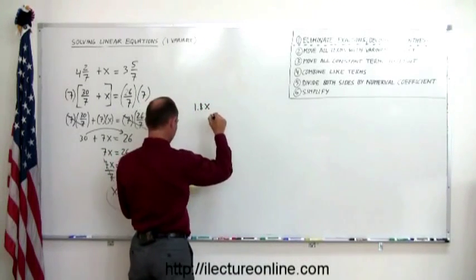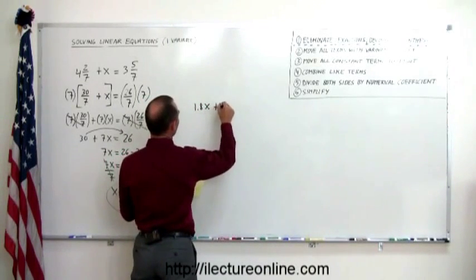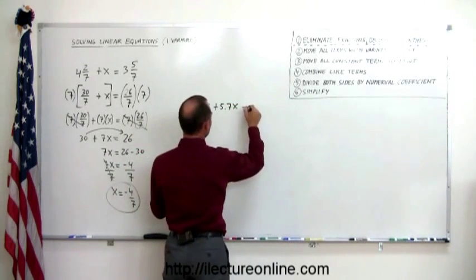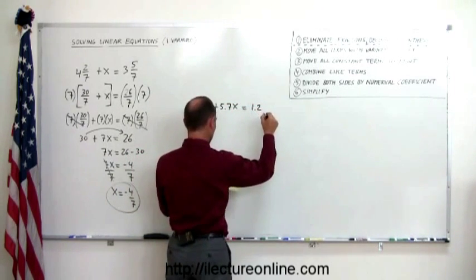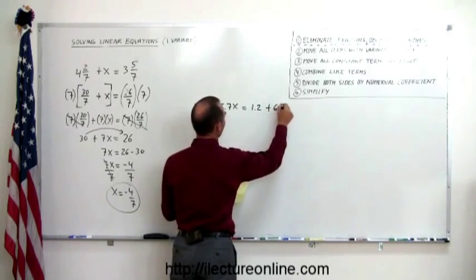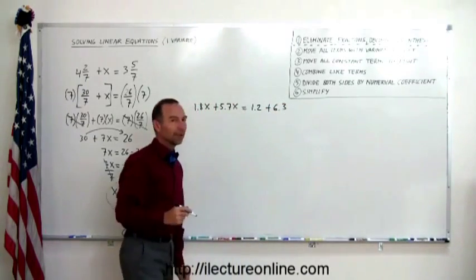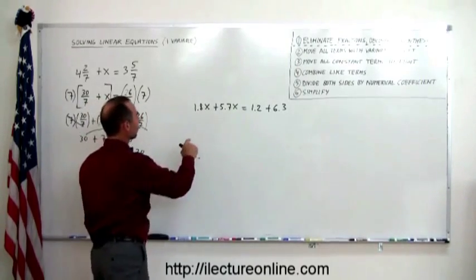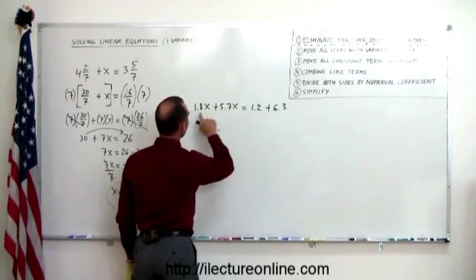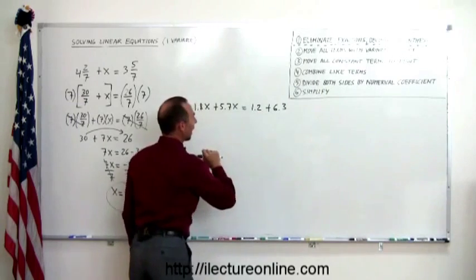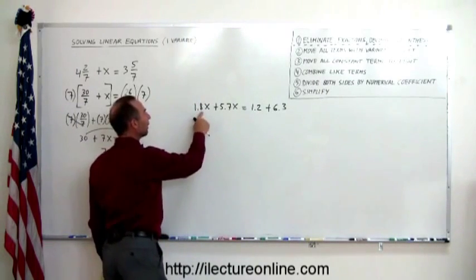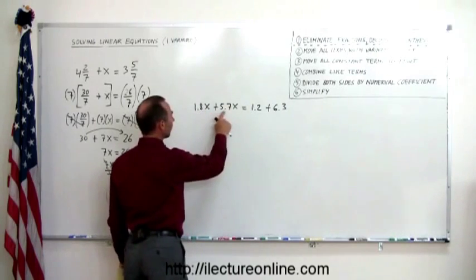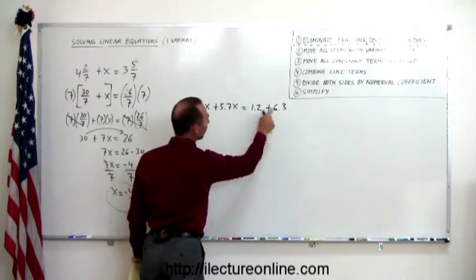1.8x plus 5.7x equals 1.2 plus 6.3. Clearly we have decimal places now, decimals. Notice that there's four terms, each have a decimal sign. And notice that they only have one decimal place after the decimal. So this is 1.8, 5.7, 1.2, and 6.3.